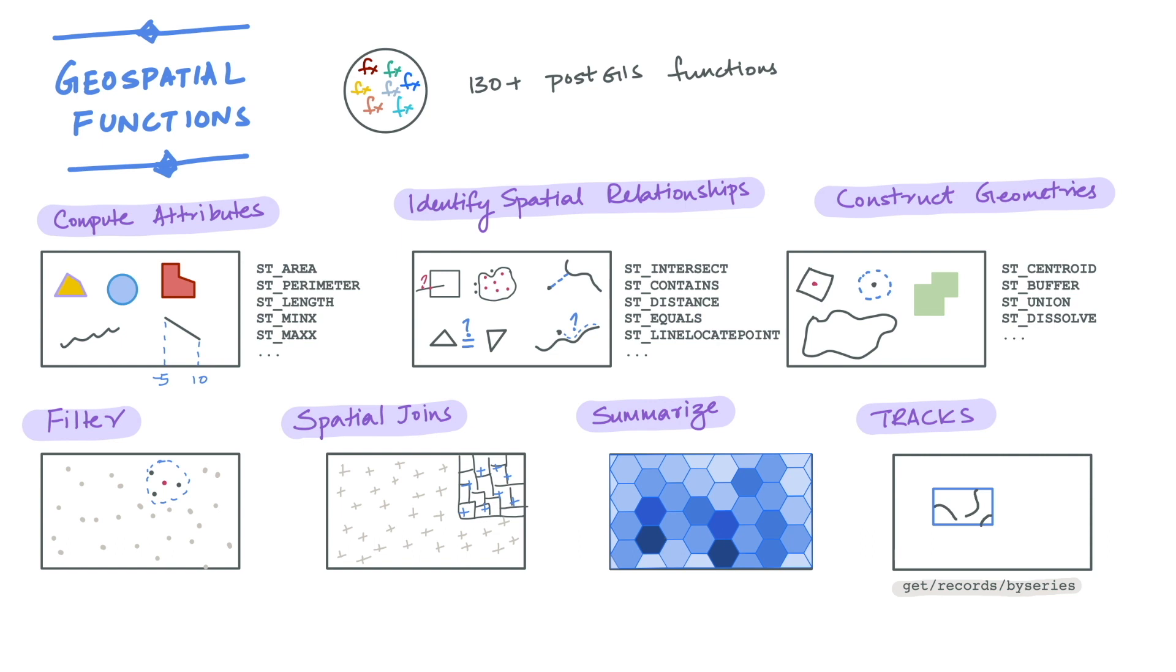Say we have a filtered view as shown here. When this is passed to the endpoint along with the table that contains all the track data, it will return all the track data that is associated with the filtered set of track IDs.